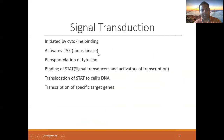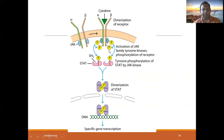Signal transduction is initiated by cytokine binding. The JAK (Janus kinase) pathway involves phosphorylation of tyrosine. Cytokine binding leads to receptor dimerization, activation of JAK, then STAT activation, dimerization of STAT, and finally DNA-specific gene transcription.